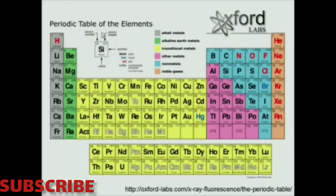Looking at the periodic table, we know how a lot of these elements behave, but take a look at something like technetium — it's a pretty good-sized metal. So how do you chelate it to some other compound and still have it maintain its biologic activity? There's a whole field of radiochemistry involved with doing that.